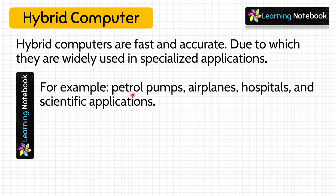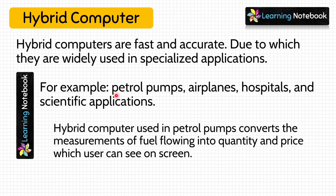Let's take an example of a petrol pump to understand hybrid computers better. When a person is filling petrol, the quantity and price of the petrol is shown on the screen. The flow of petrol is continuous (analog) data. The hybrid computer at the petrol pump converts the flow of petrol into quantity and price that we see on the screen.